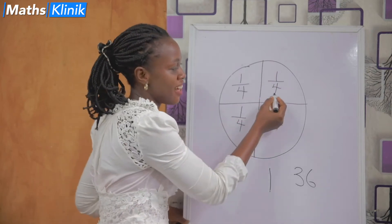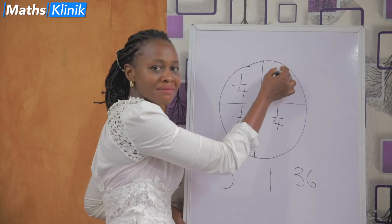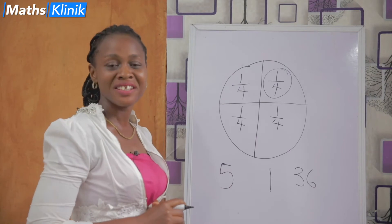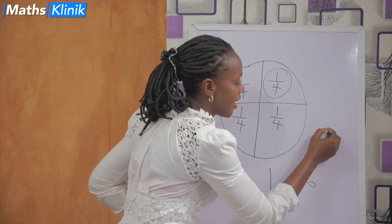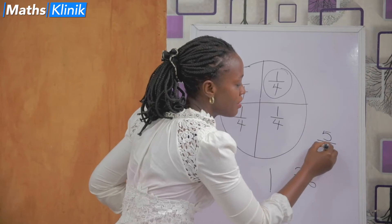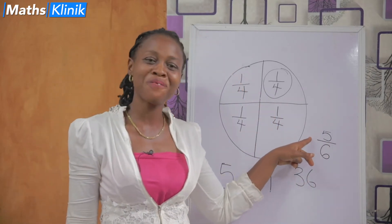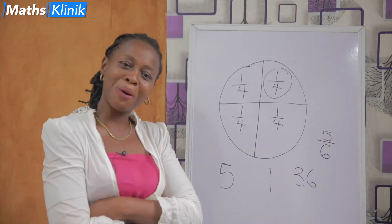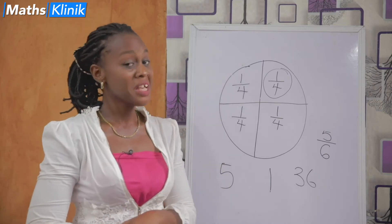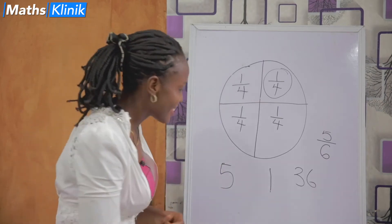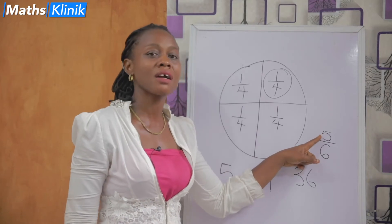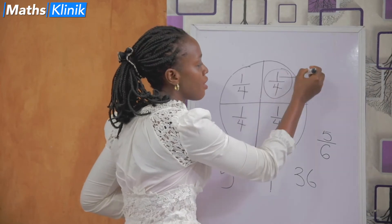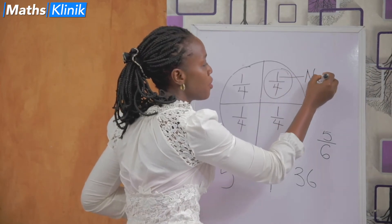Can you see the difference now? Is this a whole number? No, it's a fraction. Another example of fraction — we have five up over six. This is also a fraction. Two numbers, one up and one down. They have their names. The number up is called numerator. This number up is called numerator.